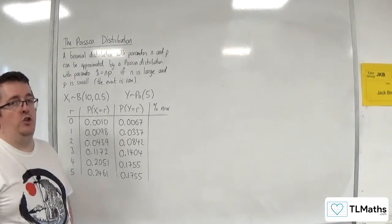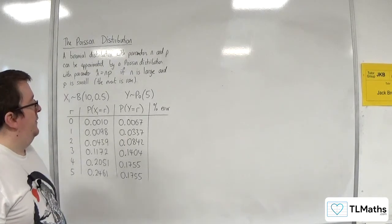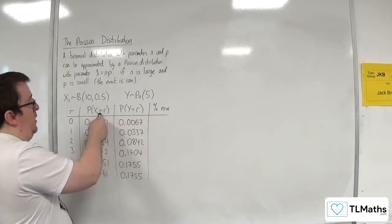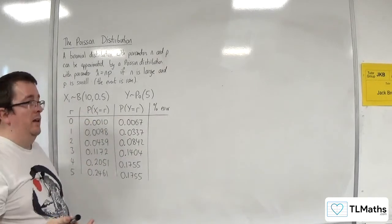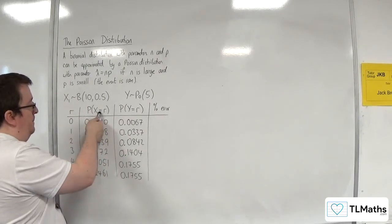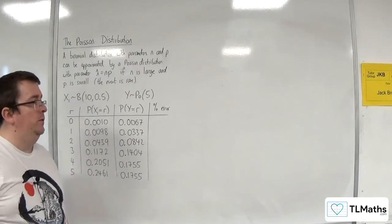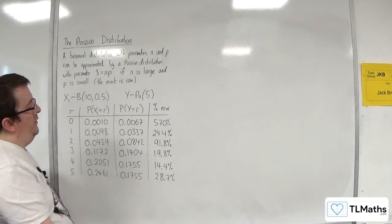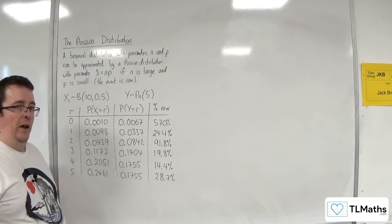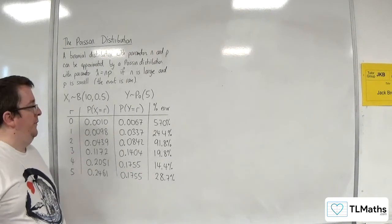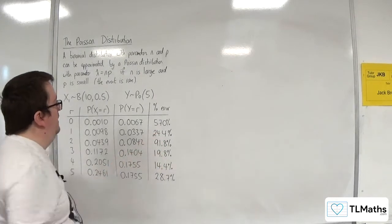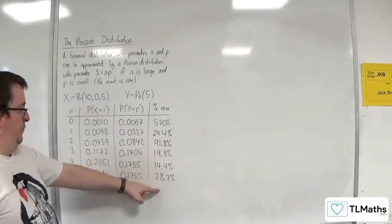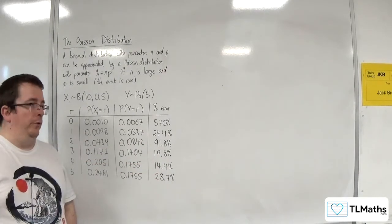So let's work out the percentage error for each of these. Now, the calculation I'm going to be doing is essentially using the modulus of that one, take away that one, and then dividing by that one. So dividing by the actual, and then multiplying by 100 to turn it into a percentage. Here's our percentage errors. So not good in other words.